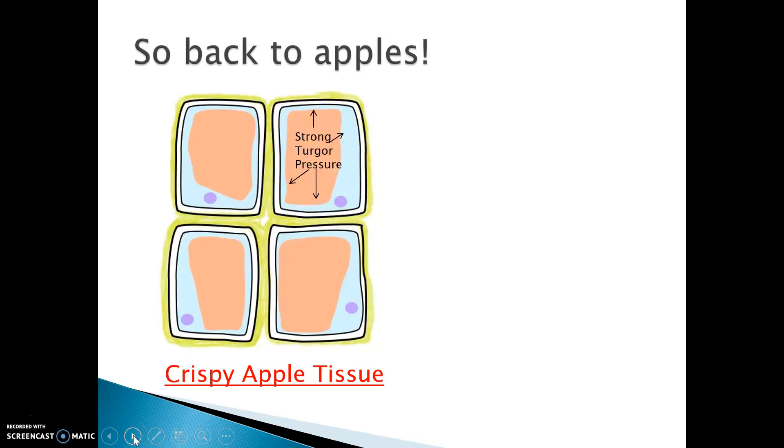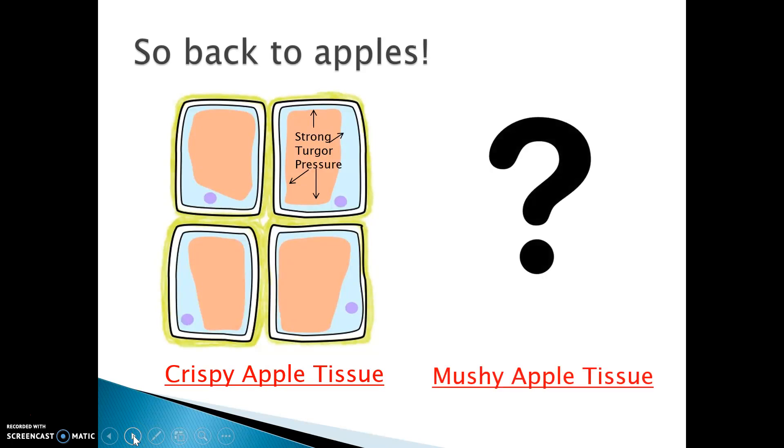Now, how might the tissue of a mushy apple look? Pause this screencast and draw the tissue of a mushy apple now. Make sure you label this as mushy apple tissue on the line. Hopefully, you draw the vacuoles much smaller, along with the cell membranes and cell walls shrinking inward. You should also label weak turgor pressure inside one of the vacuoles.